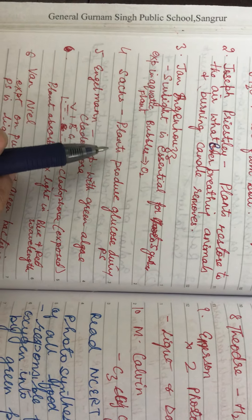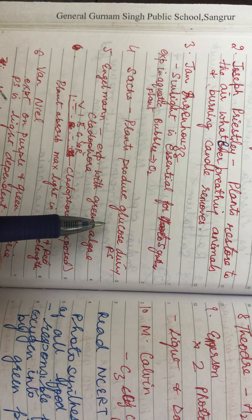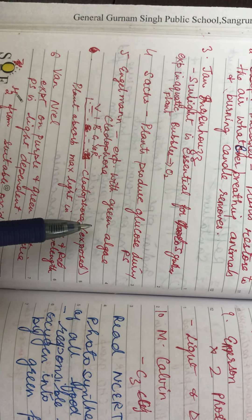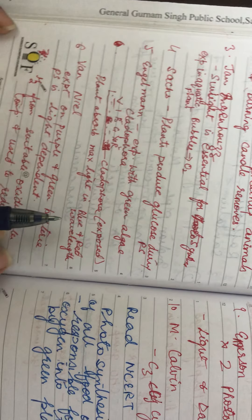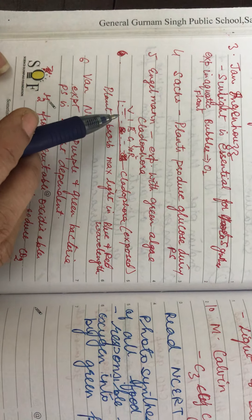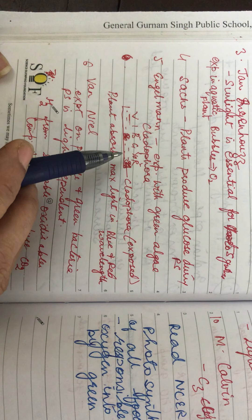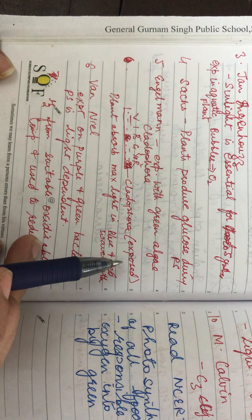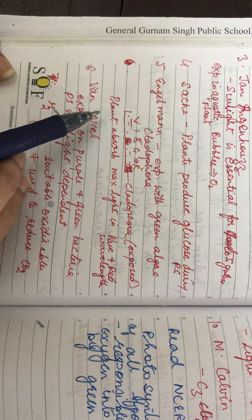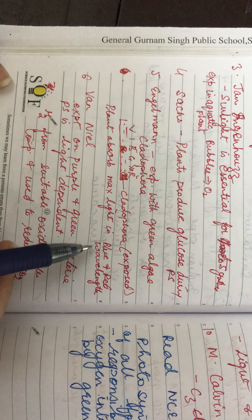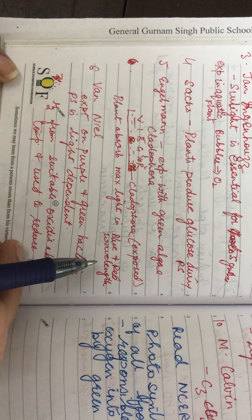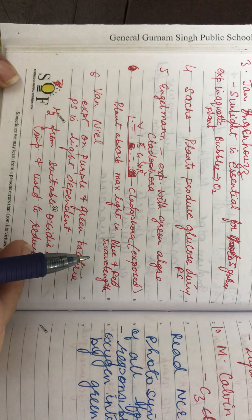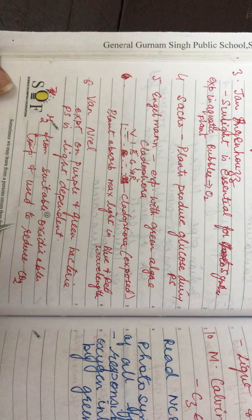He also said that plants produce glucose during photosynthesis. Then Engelmann did an experiment with green algae, Cladophora. He exposed the plants to white light and said that plants absorb maximum light in blue and red wavelengths. So maximum photosynthesis occurs in the blue and red light of the spectrum.